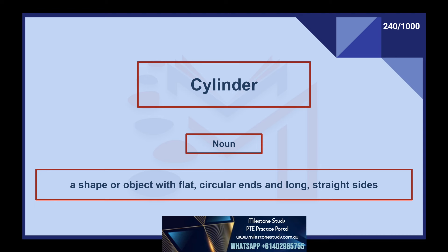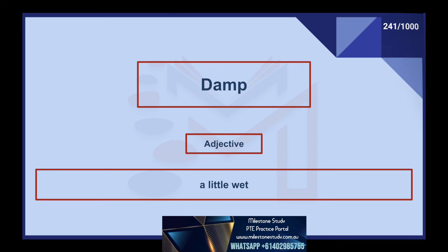Cylinder, noun: a shape or object with flat, circular ends and long, straight sides. Damp, adjective: a little wet. Deadline, noun: a date or time before which something must be done. Decay, verb: to be slowly broken down by natural processes. Deceive, verb: to make someone believe something that is not true.